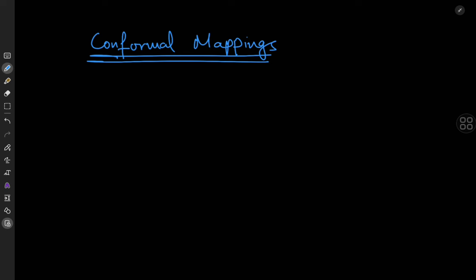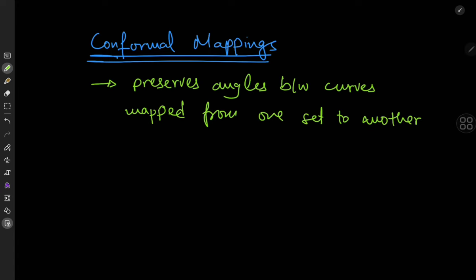The reason they're so useful is because conformal mappings are mappings that have this angle-preserving property. So conformal mappings basically preserve angles between curves mapped from one set to another.